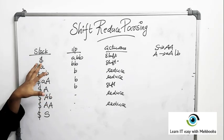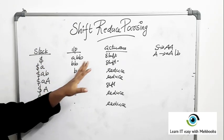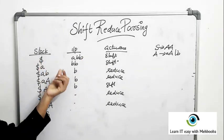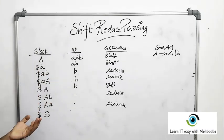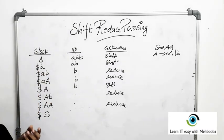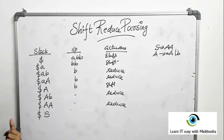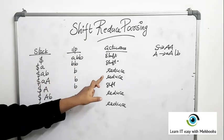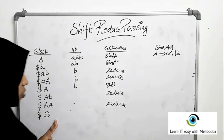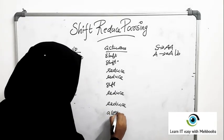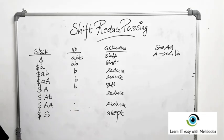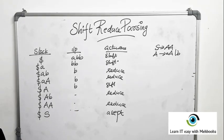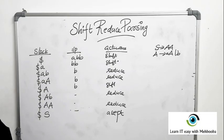When you get the start symbol on top of the stack with empty input, you say the input string is syntactically correct according to the grammar. The stack initially contains dollar; the parser moves characters from input onto the stack until it sees a handle, then reduces with the left-hand side of the corresponding production. The four actions of a shift-reduce parser are: shift, reduce, accept, and error.